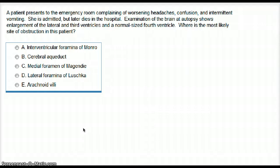Examination of the brain at autopsy shows enlargement of the lateral and third ventricles and a normal-sized fourth ventricle. Where is the most likely site of obstruction in this patient?